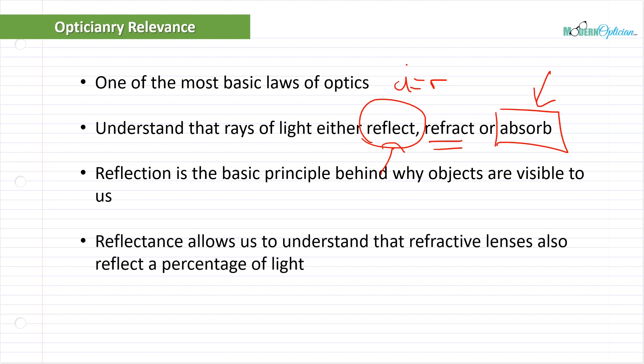Reflection is the basic principle behind why objects are visible to us. Reflectance allows us to understand that refractive lenses also reflect a percentage of light (P), which helps us understand why anti-reflective coating is important. It also helps us understand that not everything is perfect - even with modern, technologically advanced products, not all light passes through. That does it for reflection. We can move on to refraction now, something that's going to be even more useful in our arsenal.